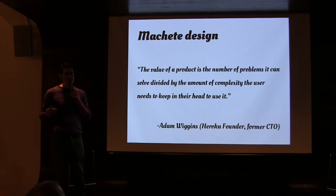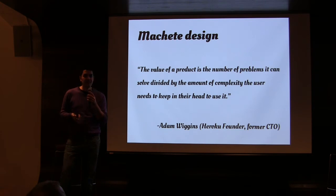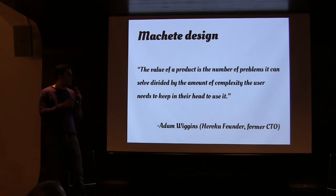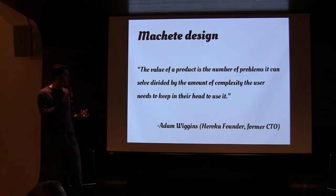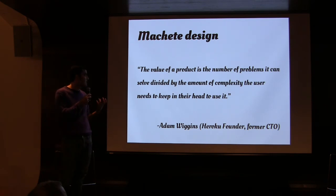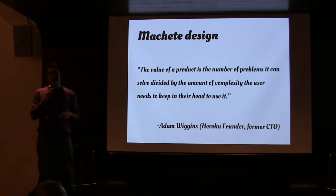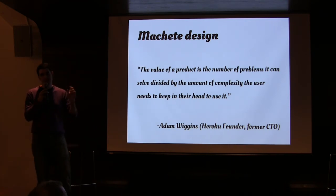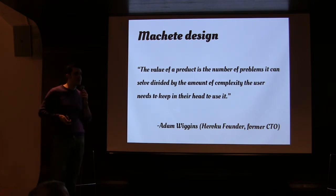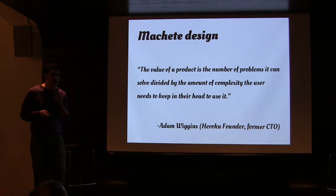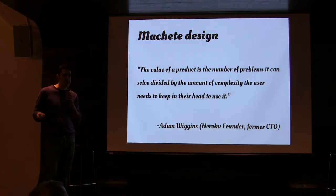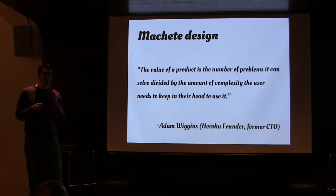What we've tried to do in these four steps is practice something called machete design, which came out of the Heroku team. A short way to explain it: the value of the product is the number of problems it can solve divided by the amount of complexity the user needs to keep in their head to use it. If you're thinking of adding a little feature that makes the product just a bit harder to use, you have to figure out if it's worth it. Most of the time it's not — you don't need that extra button, you don't need that extra complication.